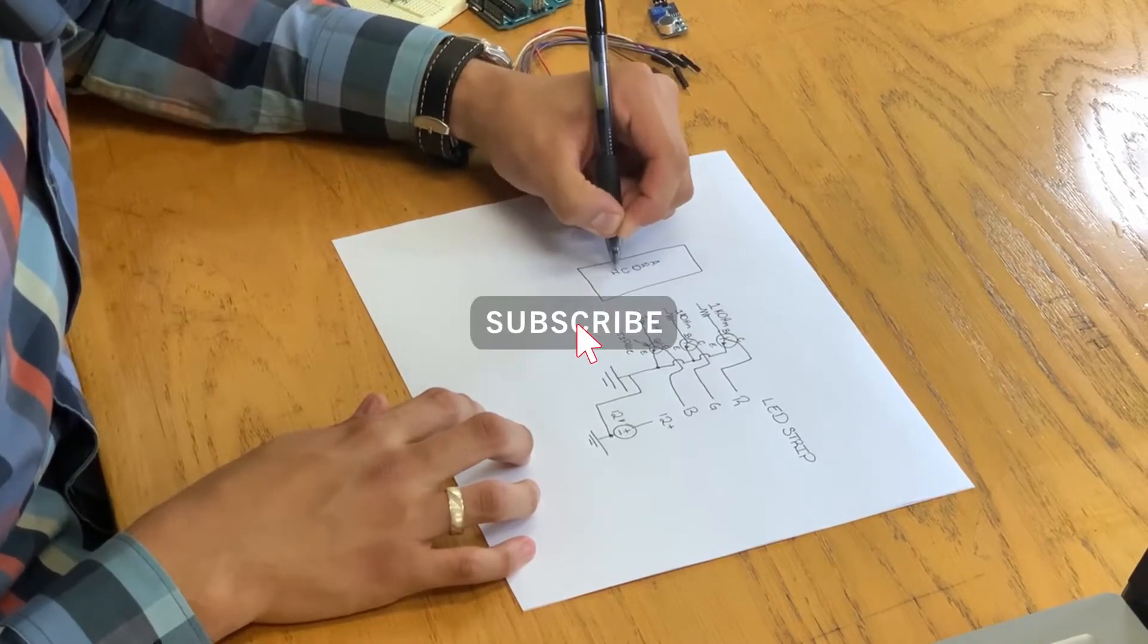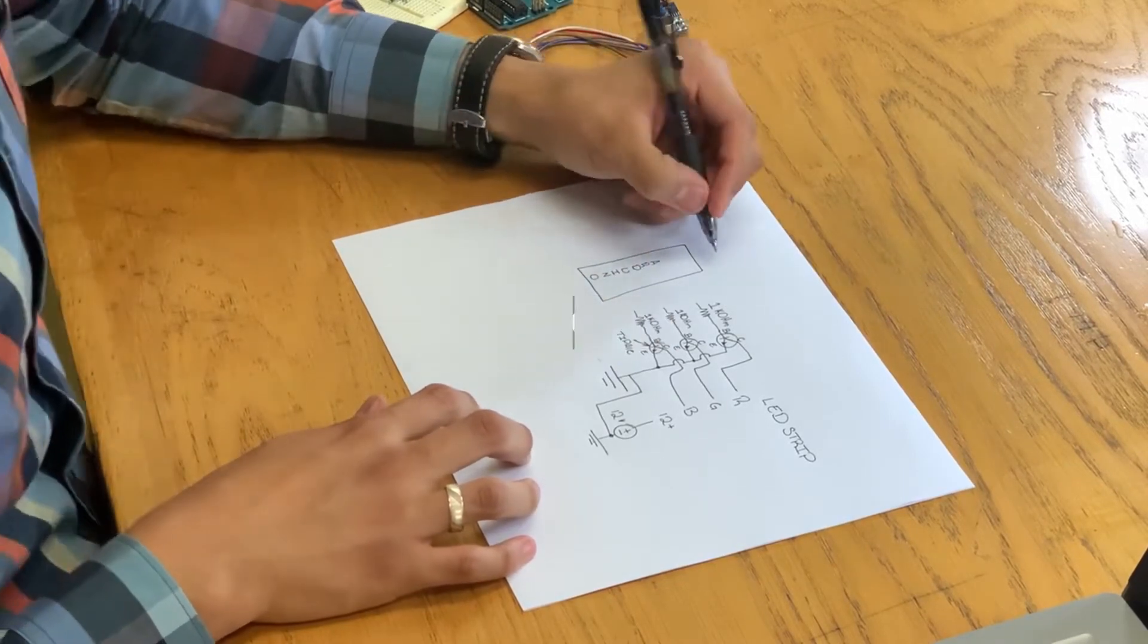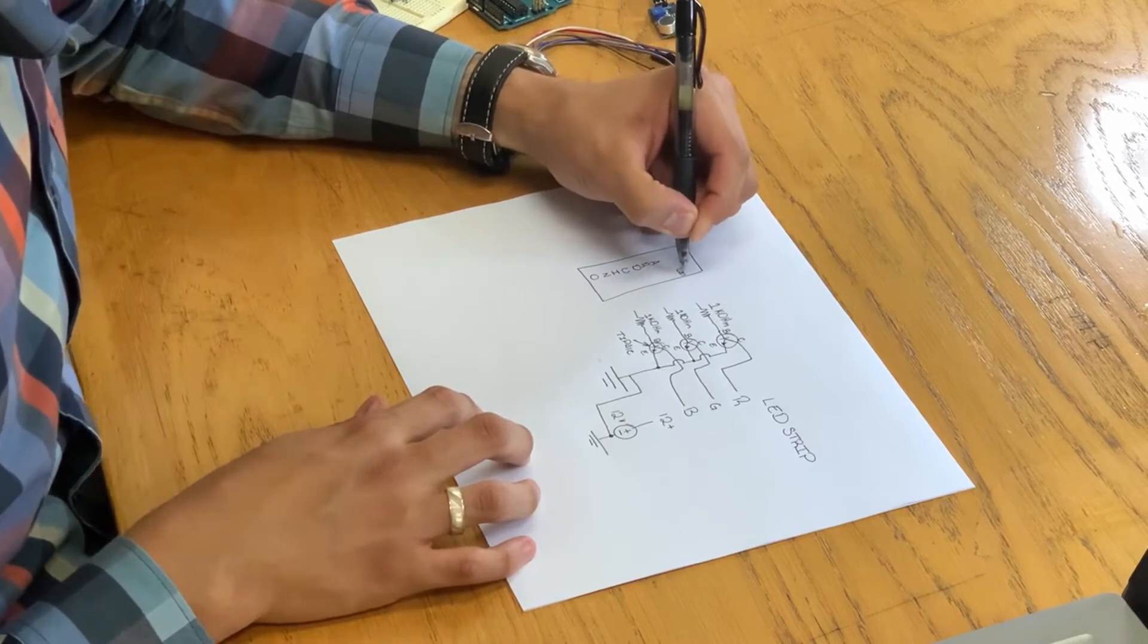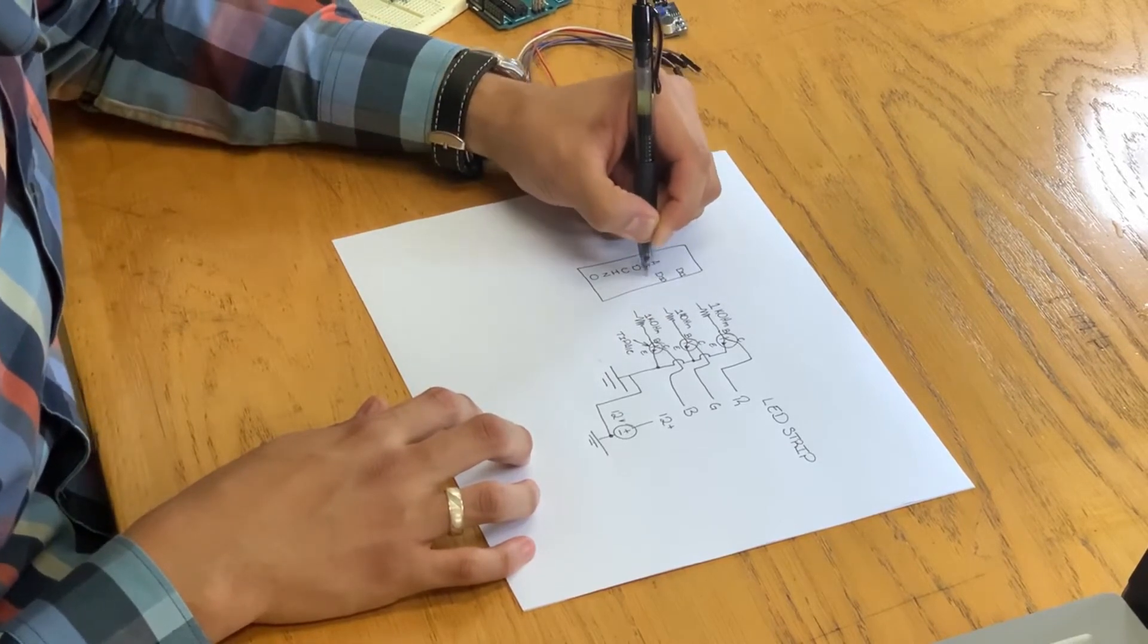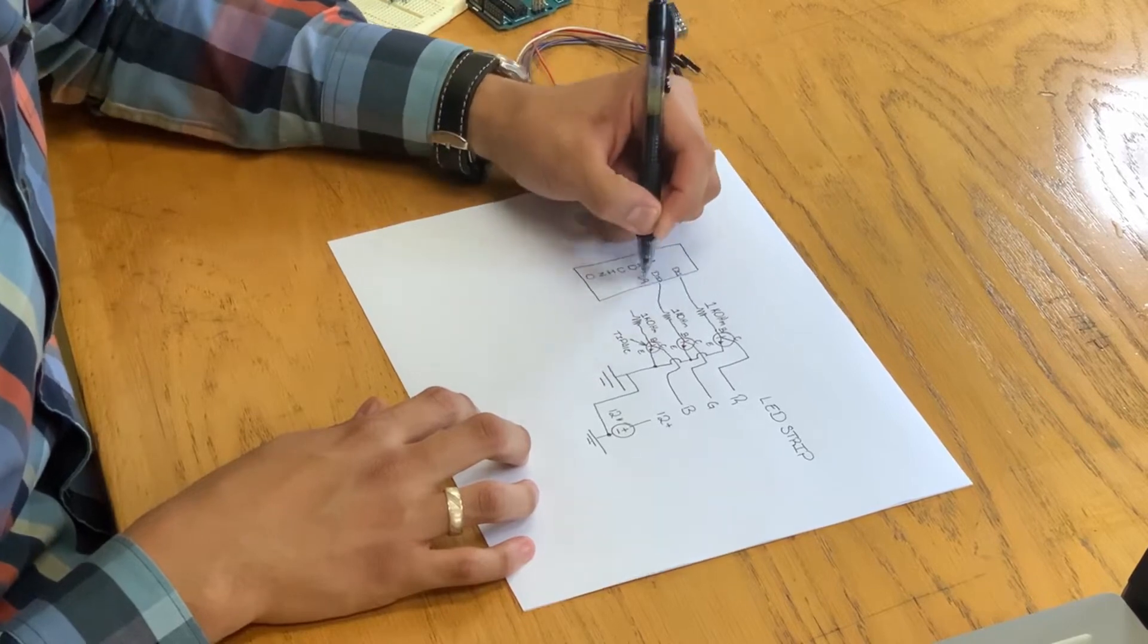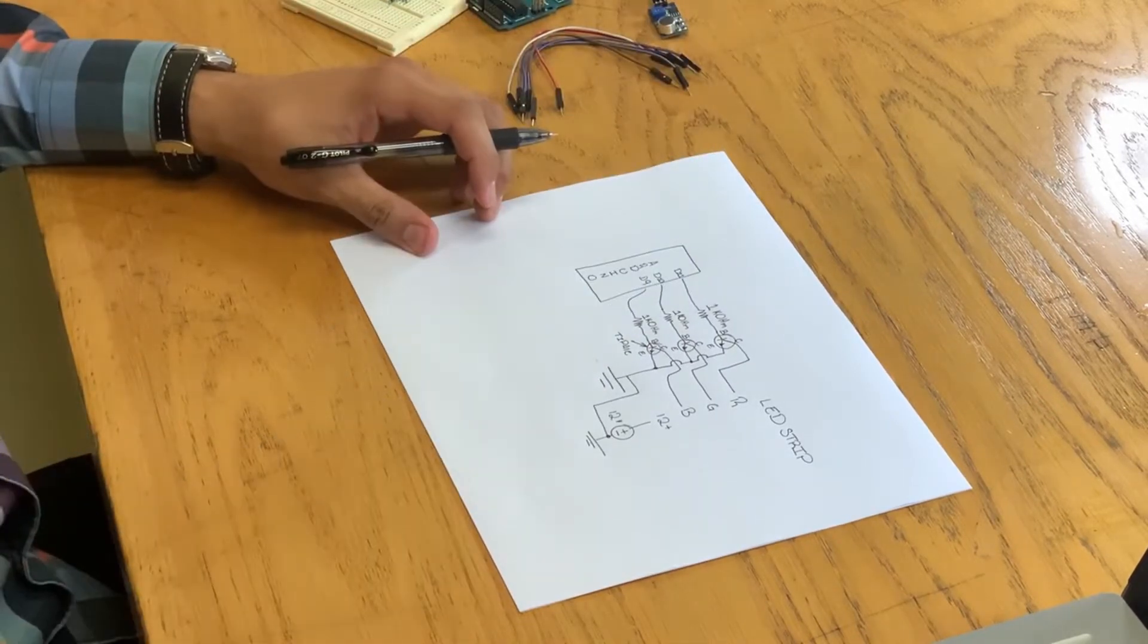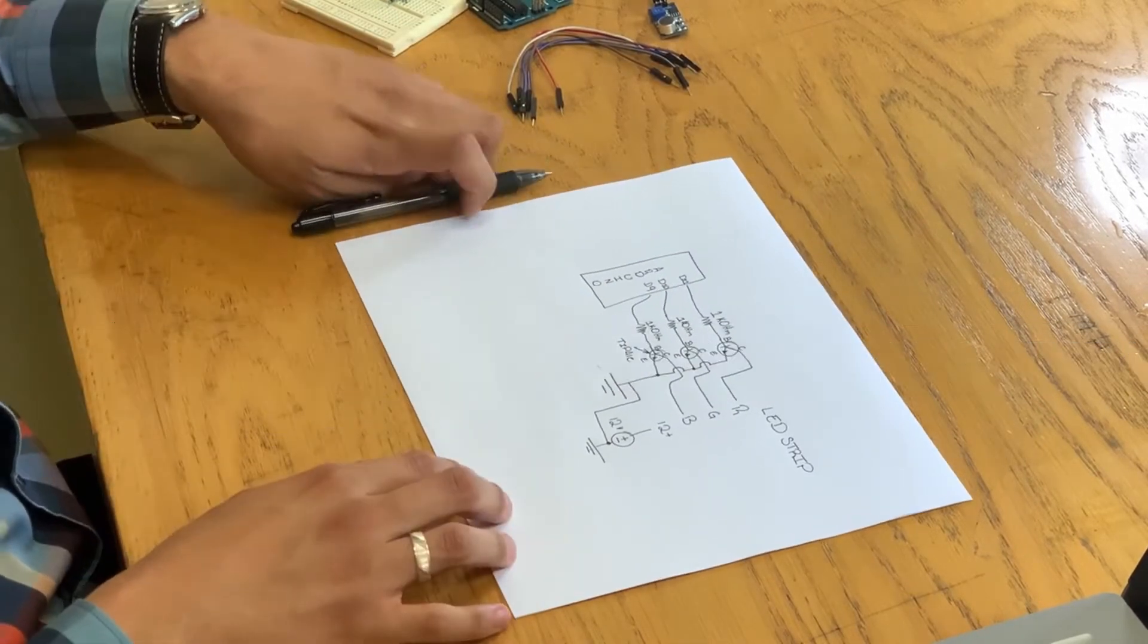In Arduino, connect digital pin 11 to the resistor that is linked at the red color in your LED strip. Now repeat the same for digital pin 10 but this time for the green color, and digital pin 9 for the blue color.